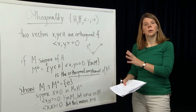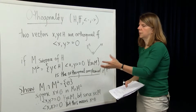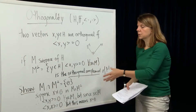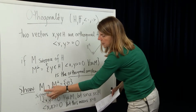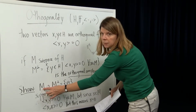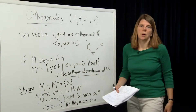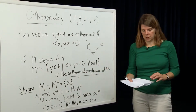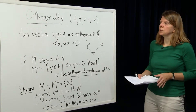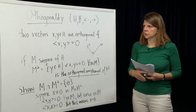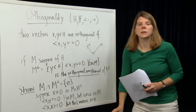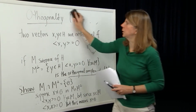So we've defined orthogonality of vectors, defined orthogonal complements of subspaces, and showed that the only vector common to a subspace and its orthogonal complement is the zero vector. Now let's move on to a very important concept also building on inner products: the adjoint map.